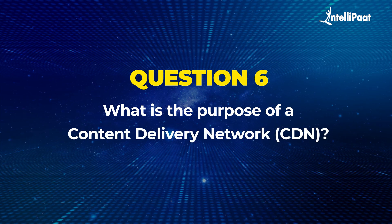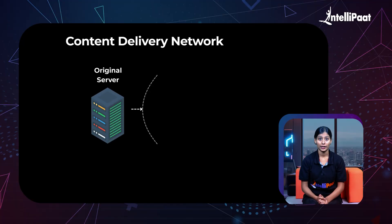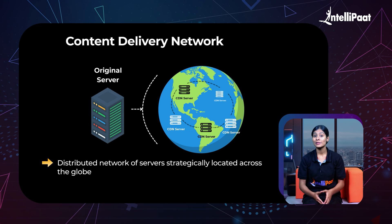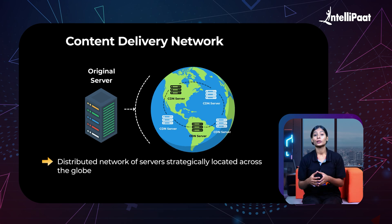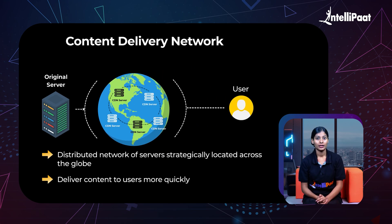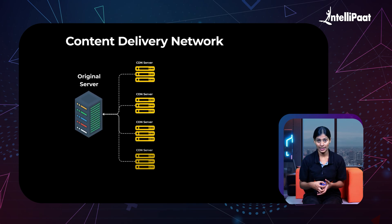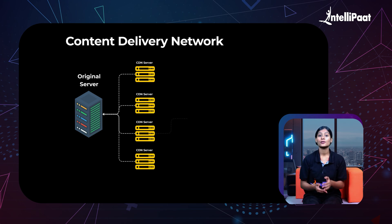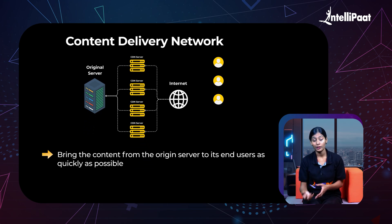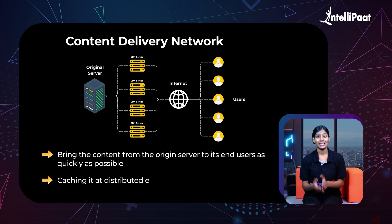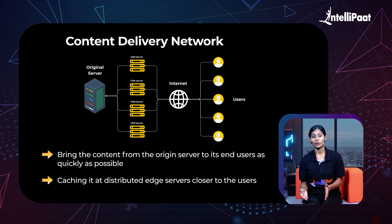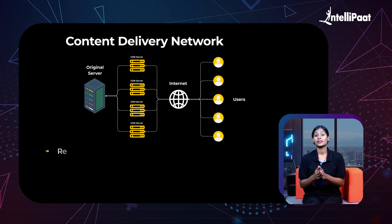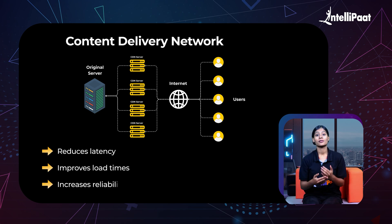Now that you've understood the concept of caching, let's move to our sixth question: what is the purpose of a content delivery network? A CDN is a distributed network of servers strategically located across the globe to deliver content to users more quickly. The content stored inside CDN servers is called cached content. In a nutshell, the primary purpose of a CDN is to bring content from the origin server to end users as quickly as possible by caching it at distributed edge locations closer to the user, thereby reducing latency, improving load times, and increasing reliability.